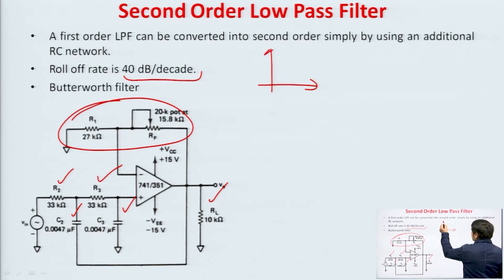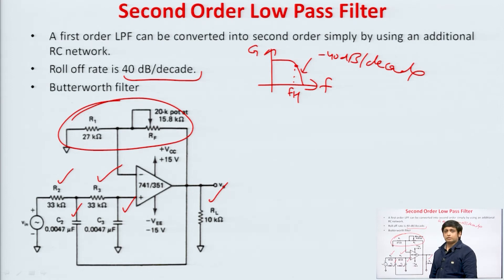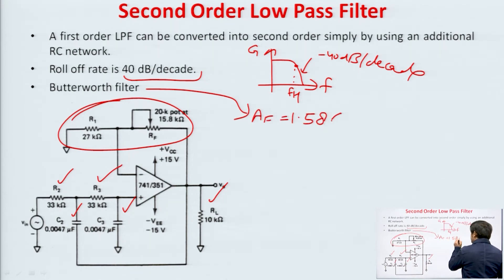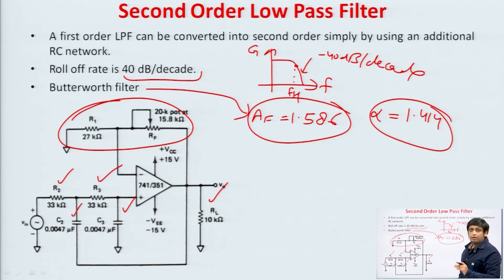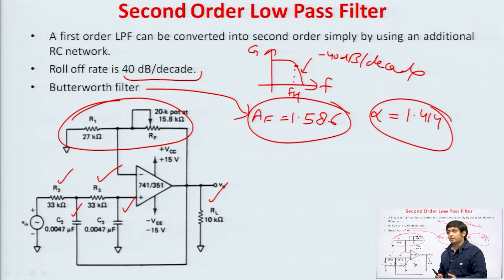What is this 40 dB per decade? It means that when we draw the gain versus frequency response, the roll-off rate will be minus 40 dB per decade. The cutoff frequency is fH. Normally we choose the Butterworth filter when designing second order filters. For the Butterworth filter, the pass band gain Af is 1.586, corresponding to the damping coefficient alpha of 1.414. In the problems of second order filters, we will be using Af = 1.586. By default we will take Butterworth response — if the pass band gain is not given in the question, we take Af = 1.586.